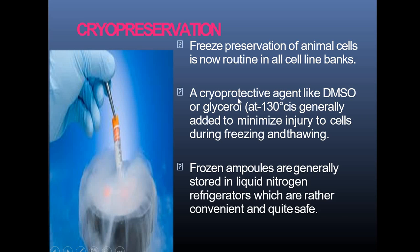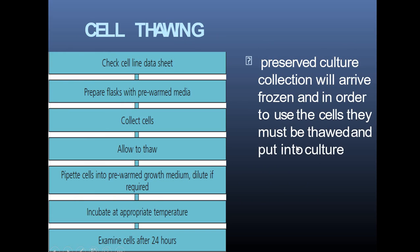After everything is done, the cultured cells are stored by a method called cryopreservation, using DMSO or glycerol as cryoprotectants, at minus 130°C, which minimizes injury to cells. When you want to reuse these stored cells for study, you perform a process called cell thawing. The procedure: check the cell line data sheet, prepare the flask and add pre-warmed medium, collect cells, allow to thaw, prepare cells in pre-warmed growth medium, dilute if required, incubate, and examine cells after 24 hours.